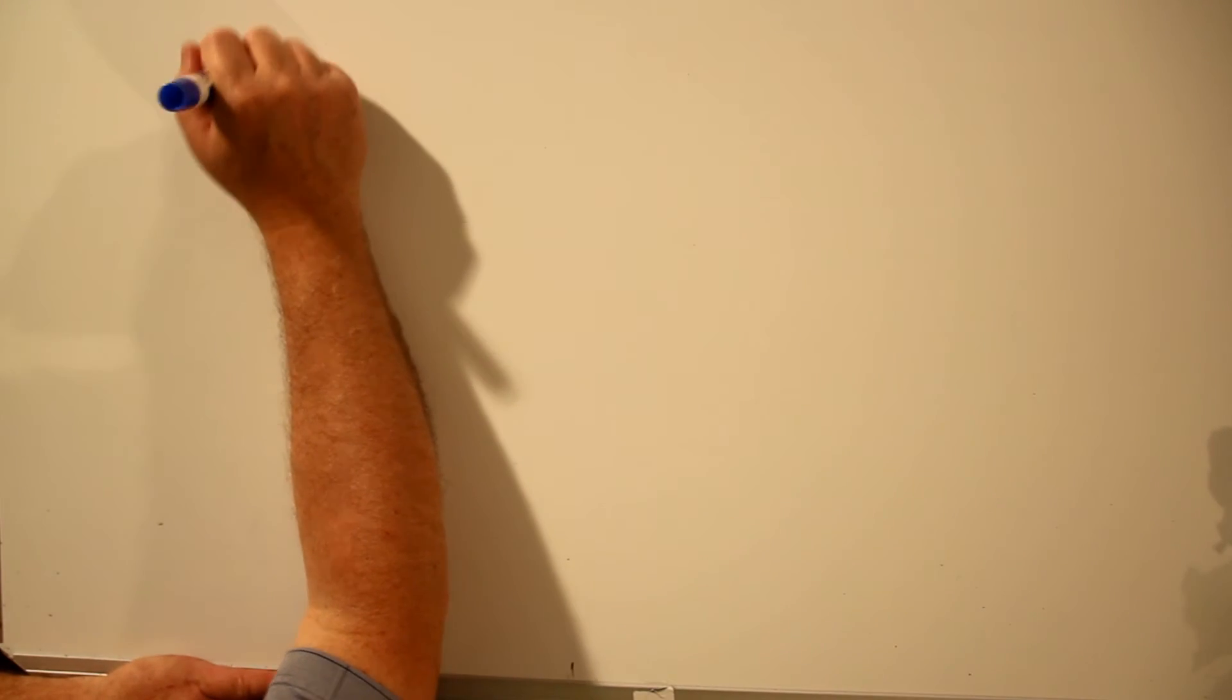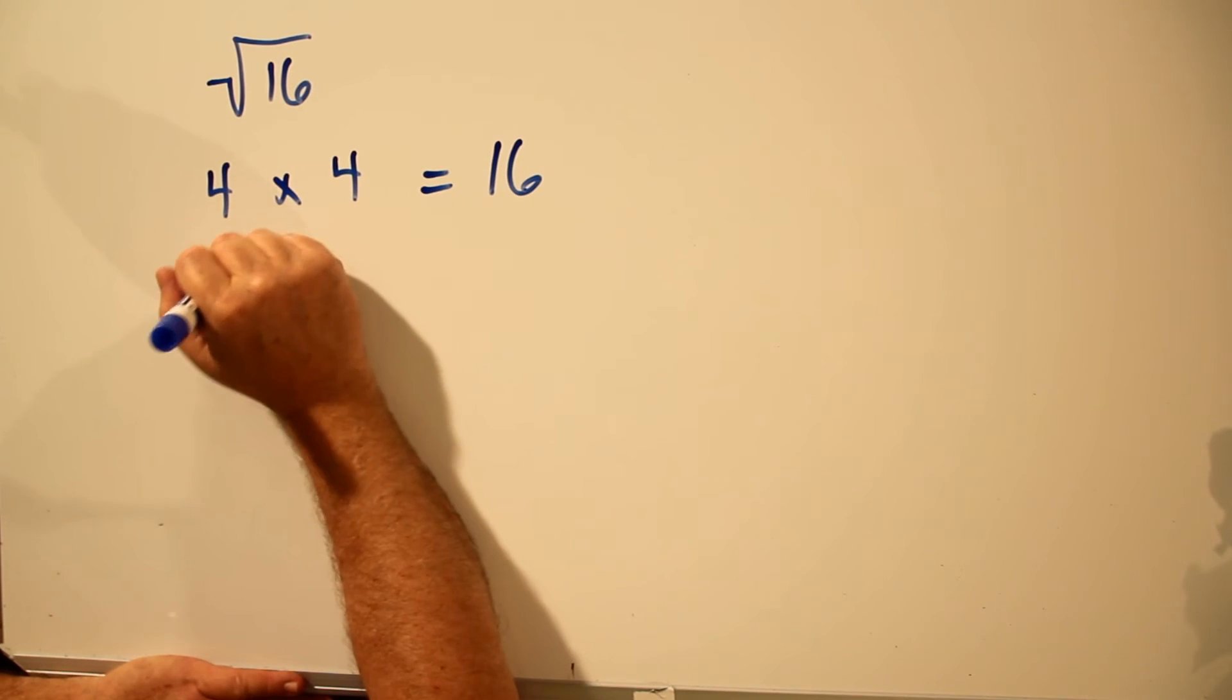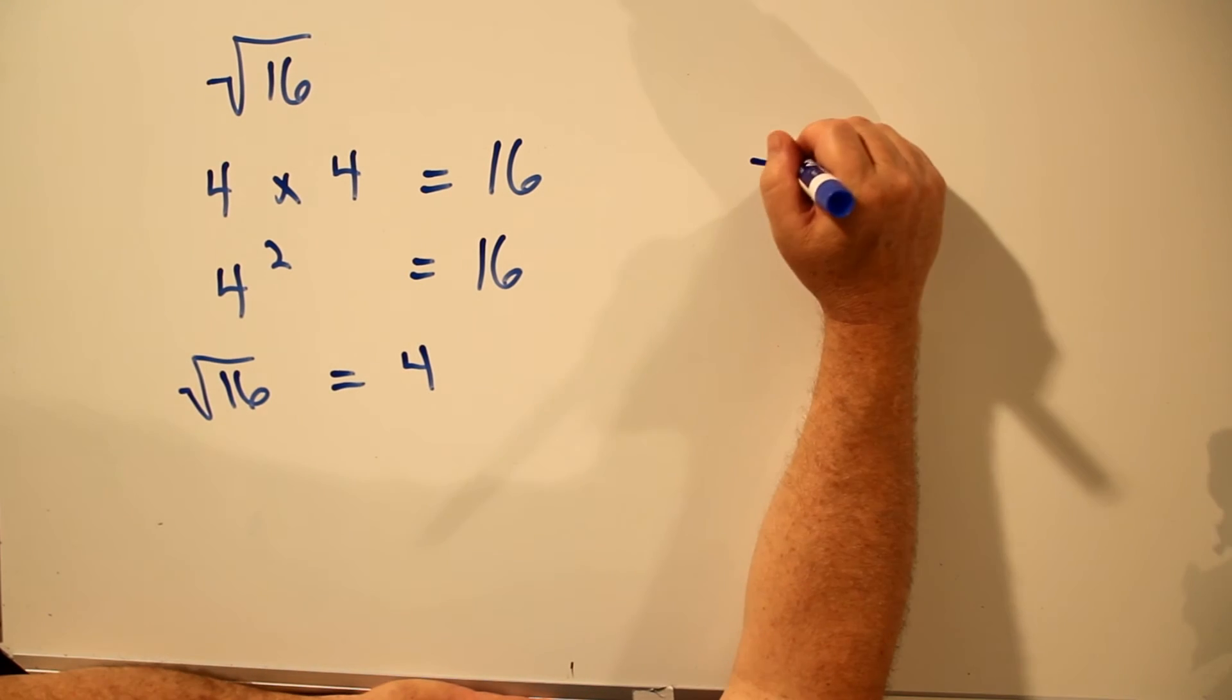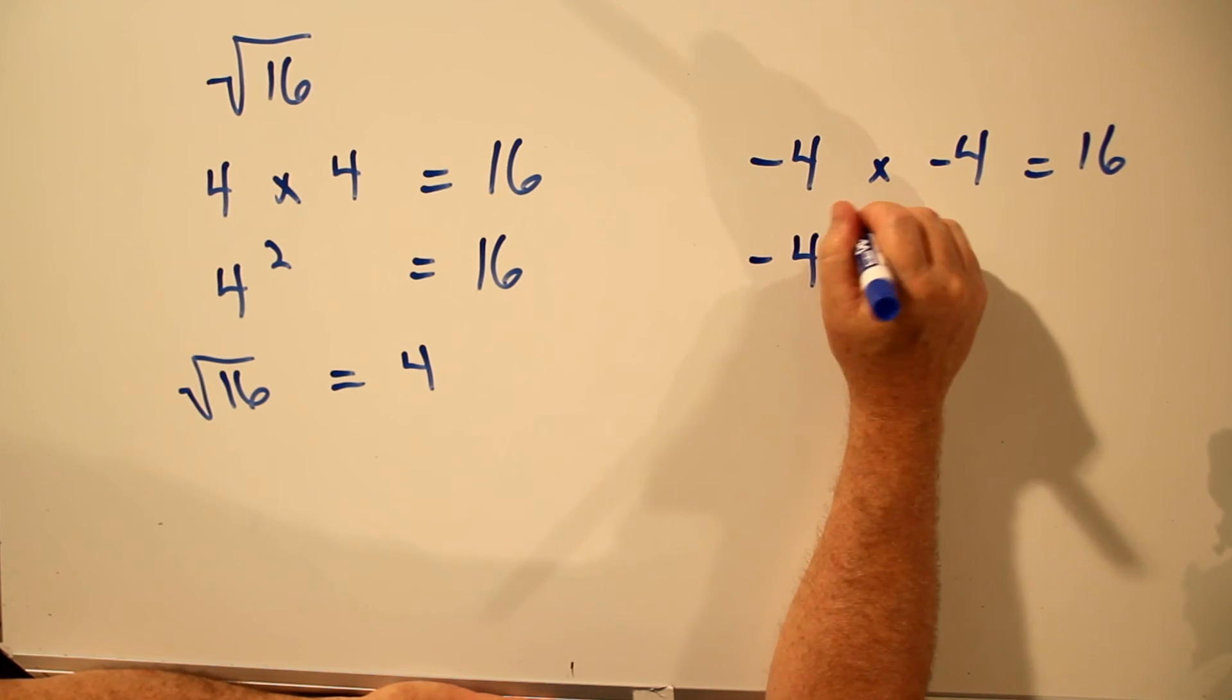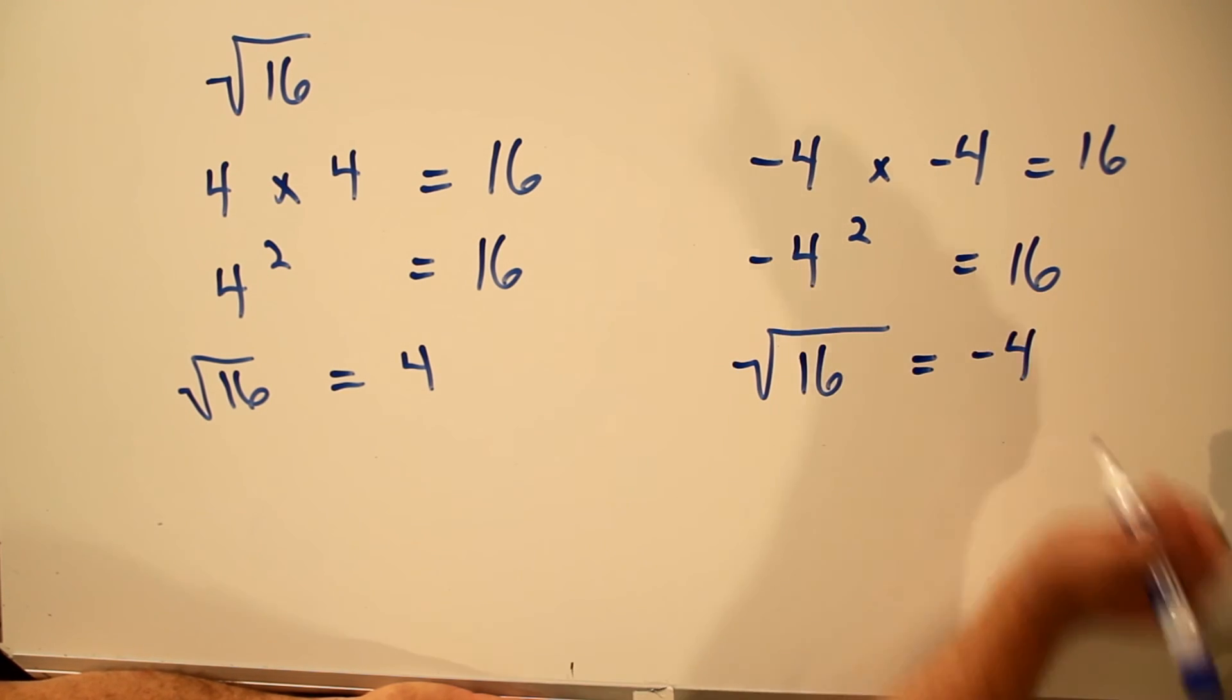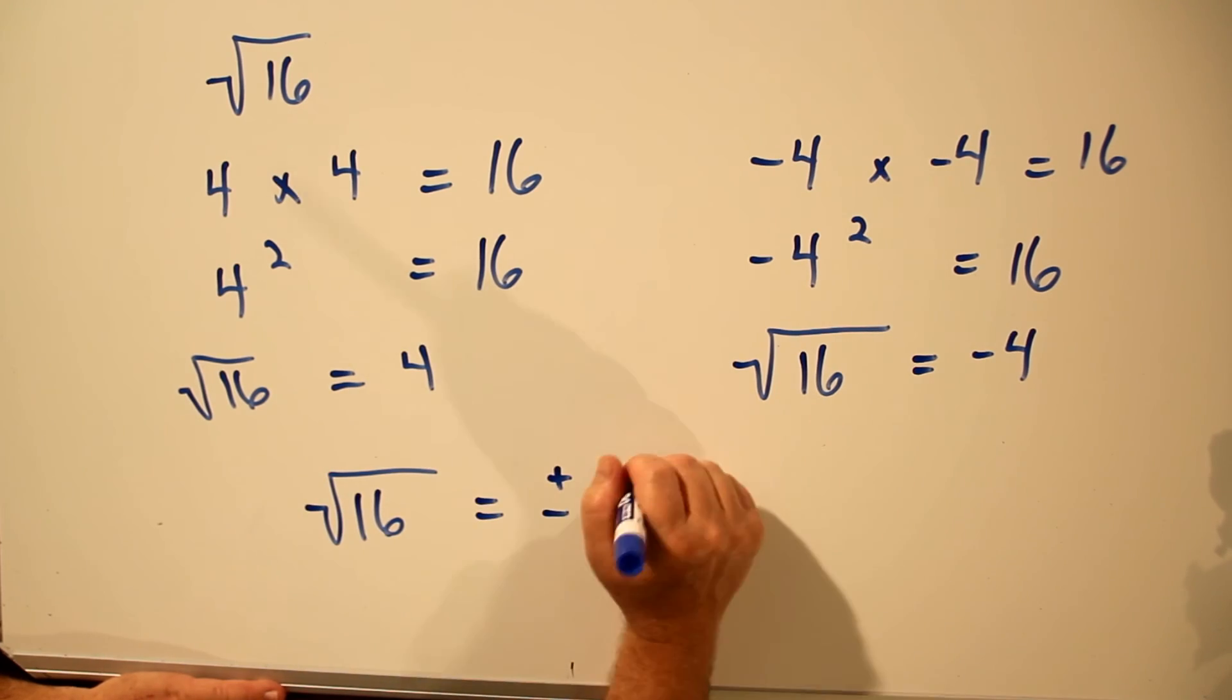Let's find the square root of 16. 4 times 4 is 16. 4 squared is 16. The square root of 16 is 4. But remember, minus 4 times minus 4 is also positive 16. Minus 4 squared is 16. The square root of 16 is minus 4. So the square root of 16 is plus or minus 4.